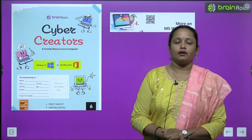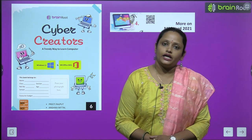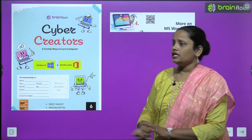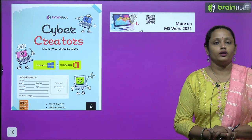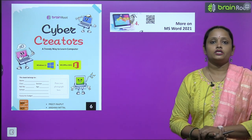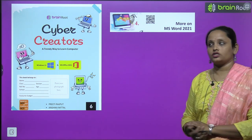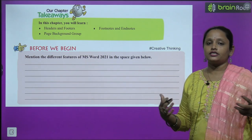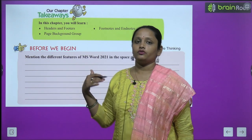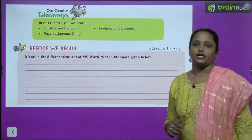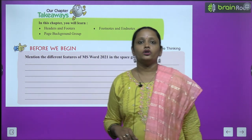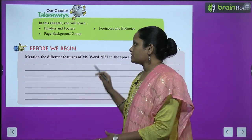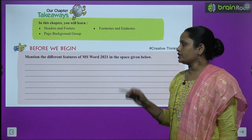Hello my dear kids, welcome back. I am Vandana and we are learning computer of class 6 by Brain Root series. The book name is Cyber Creators. Today we are going to start a new chapter — chapter number 4 — and the name is 'More on MS Word 2021'. We are going to learn what is header and footer, footnote, endnote, and page background group. Let's start with the activity: mention the different features of MS Word 2021 in the space given below.